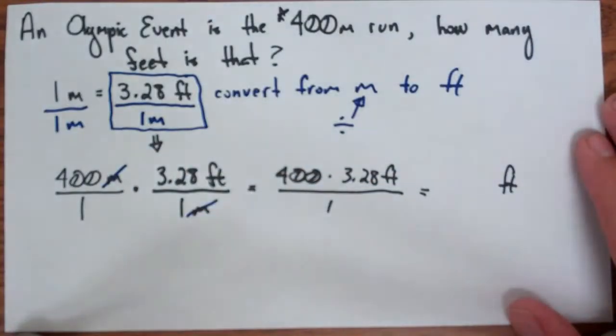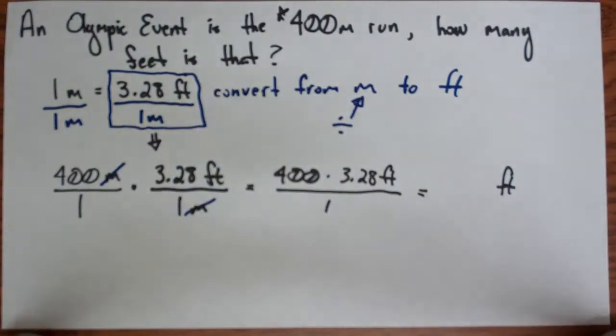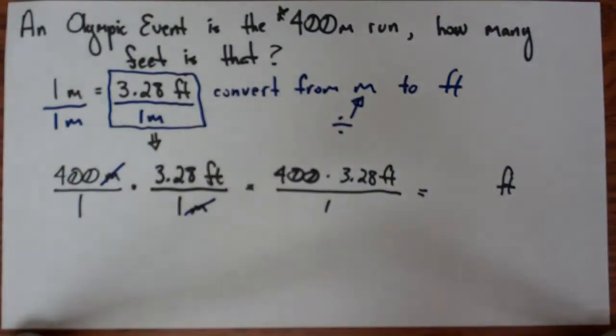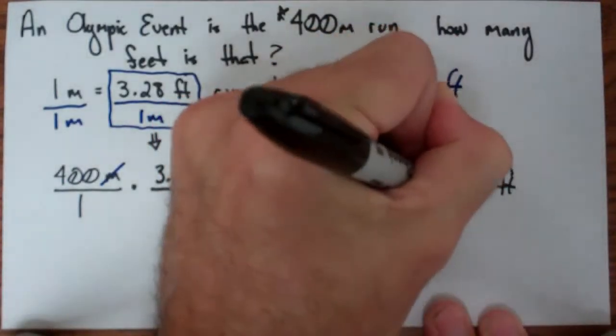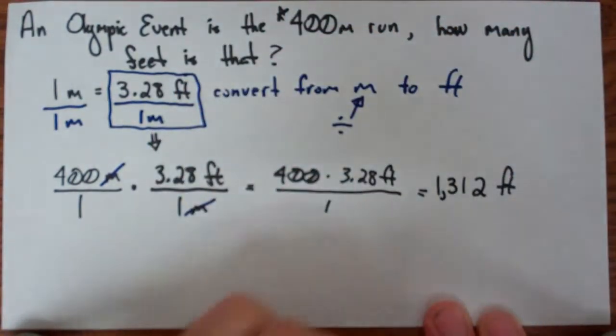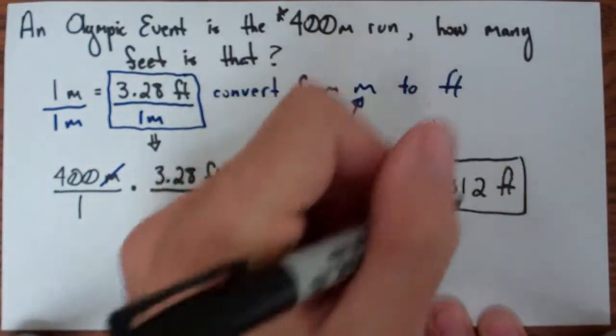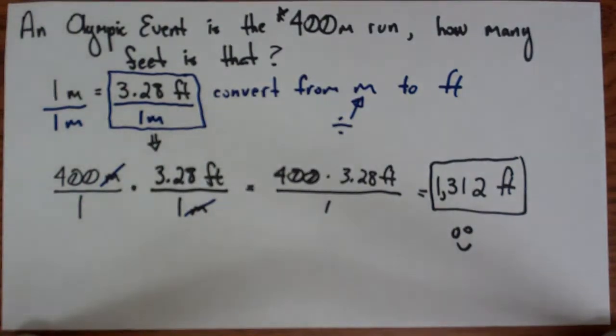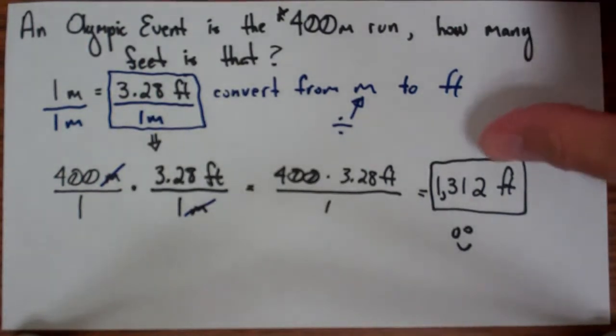So this final example is going to be in feet here. Now pull out my trusty TI calculator, and I take 400, and multiply it by 3.28, and I get 1,312 feet as my final answer, and that makes us happy. So a 400 meter run is basically 1,300 feet, so it's a good distance. So that would be one example.